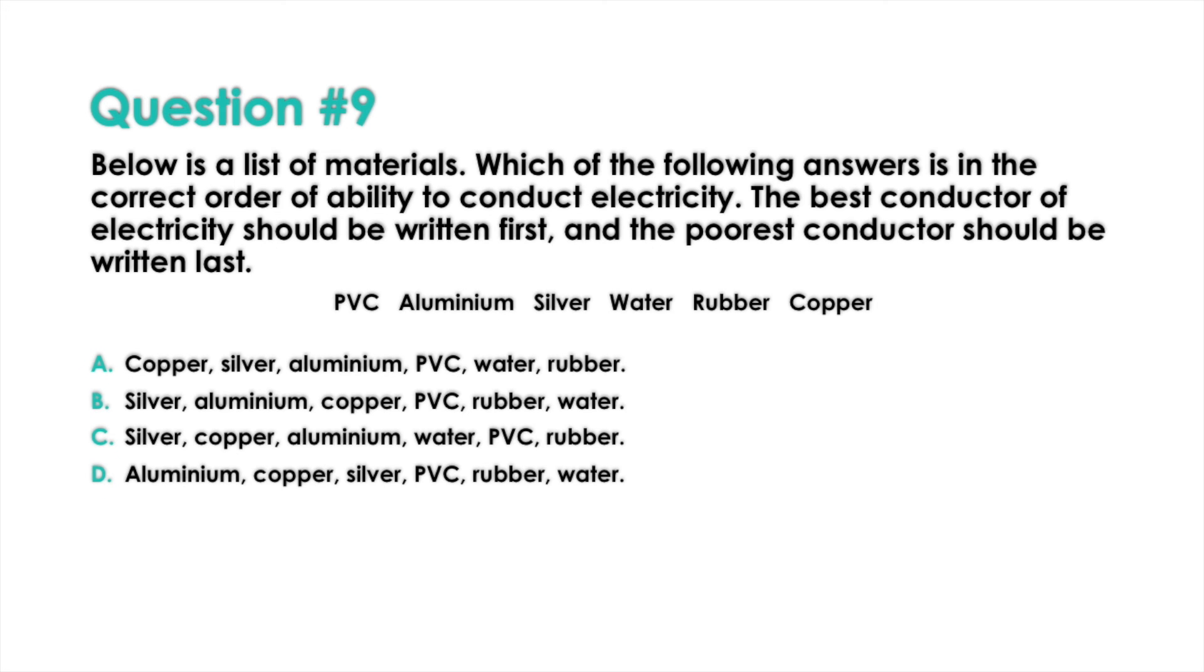Question 9: Below is a list of materials. Which of the following answers is in the correct order of ability to conduct electricity? So we should have the best conductor first and the poorest should be written last. So order from the best conductor to the worst.